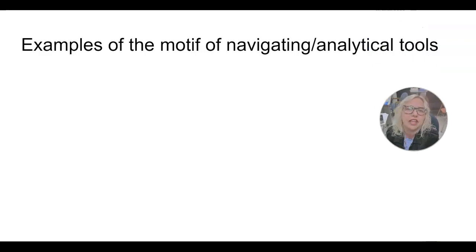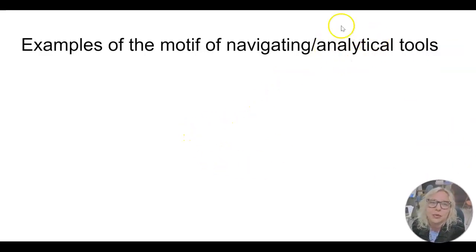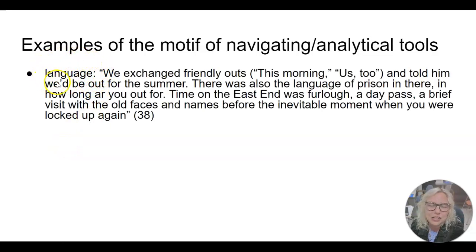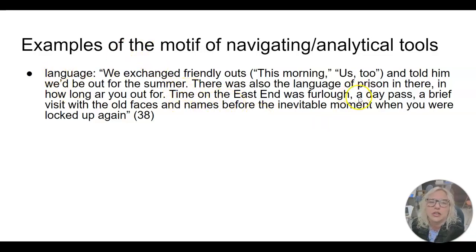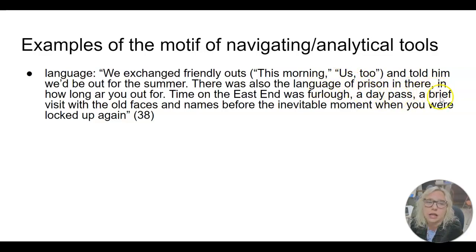Examples of the motif of navigating analytical tools — not just navigation of places, but also of language. All the things he makes use of in his toolbox to navigate his world, to analyze what's going on around him so he can find his place. He analyzes language, for example showing that using the word 'out' is actually a way of referencing prison — as if their lives in Manhattan are the prison and being in Sag Harbor is furlough, a brief respite or break from prison.